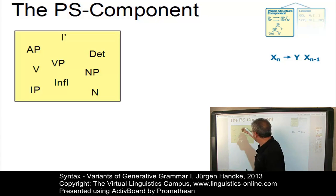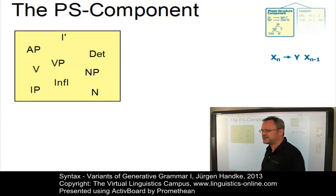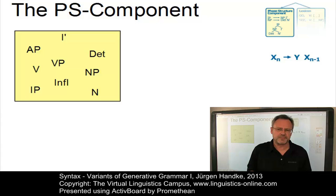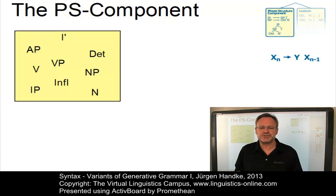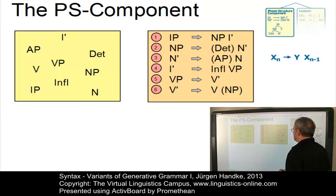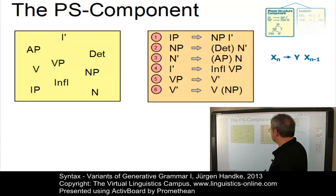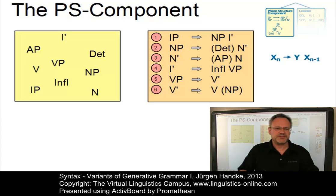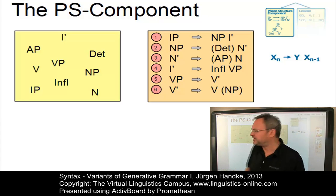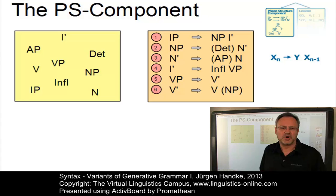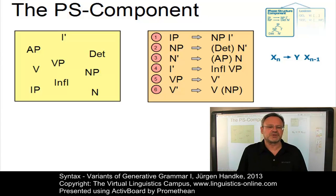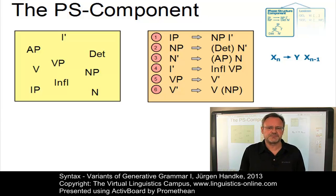Here you find I-bar, adjectival phrase, verb phrase, determiner, noun phrase and so on and so forth. Secondly, it consists of a system of rules – a system of phrase structure rules. With this rule system, and here I have chosen a fragment of the so-called X-bar system, which is by no means complete but I will use it for illustration purposes, with such a rule system we can generate several sentence hierarchies.